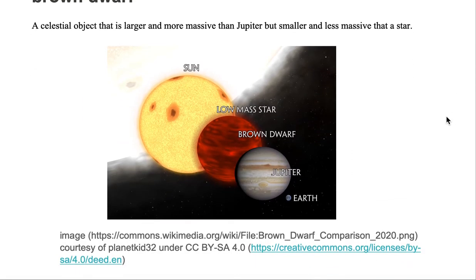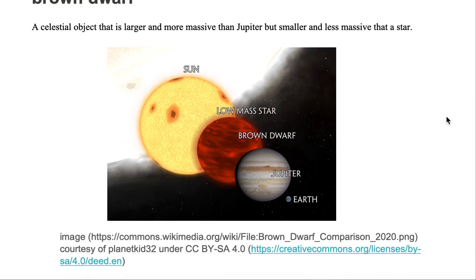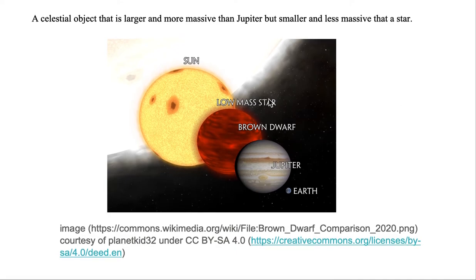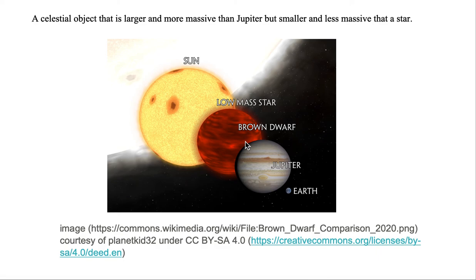Let's take a look at the mass and size of a brown dwarf. Here in this image we have a brown dwarf. As you can see, its size is larger than that of Jupiter and less than that of the Sun. We know the mass of Jupiter, we know the mass of the Sun, and brown dwarfs are in between the masses of the two.